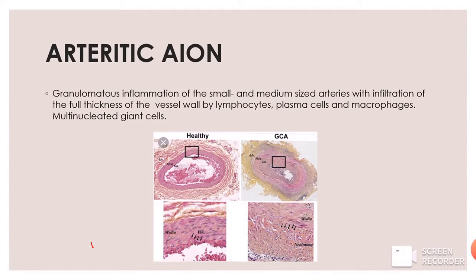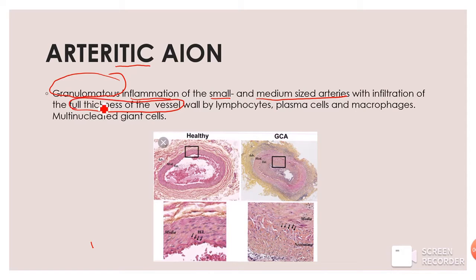Now let us talk about arteritic AION in detail. As the name suggests, 'itic' means inflammation — so arteritic AION is the inflammation of small and medium-sized arteries, specifically granulomatous inflammation. There will be infiltration of the full thickness of these vessel walls by lymphocytes, plasma cells, and macrophages. These macrophages collect together to form multi-nucleated giant cells, leading to giant cell arteritis.